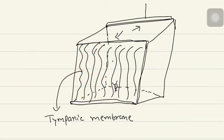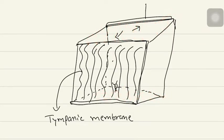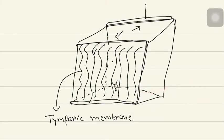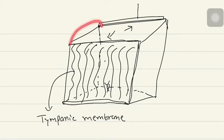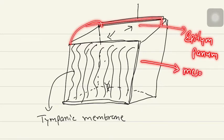This will be the roof, and this will be the floor — the floor is what we are standing upon. Now this middle ear cavity is divided into three parts: the upper part is known as the epitympanum, the middle part is the mesotympanum, and the lower part is the hypotympanum.